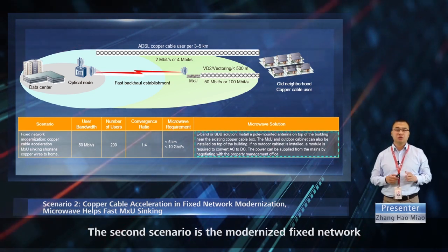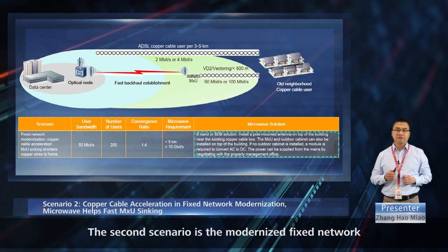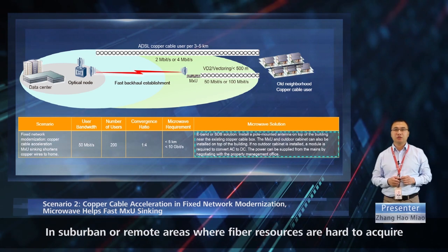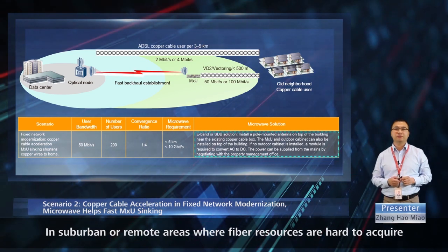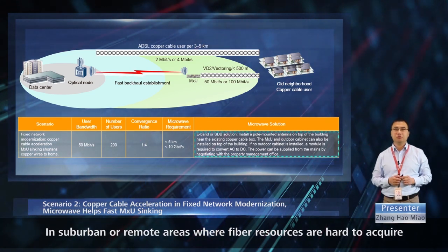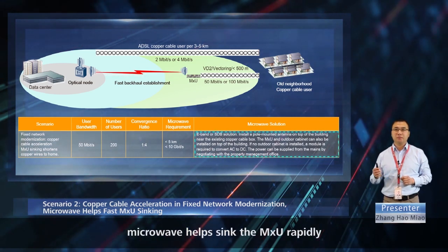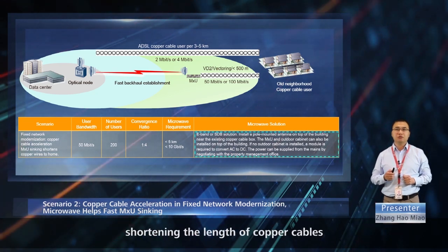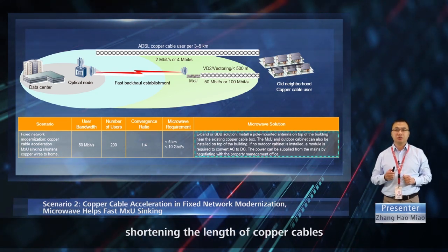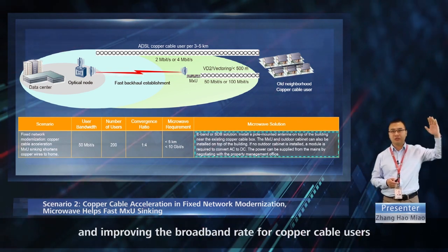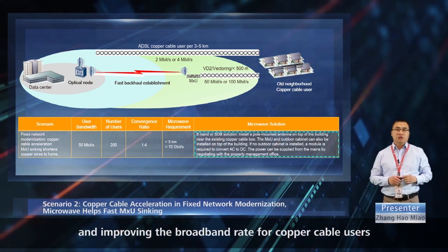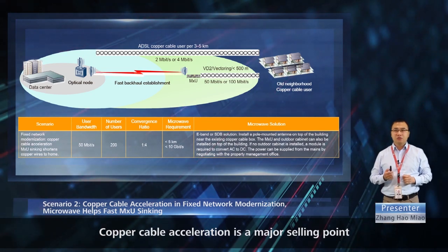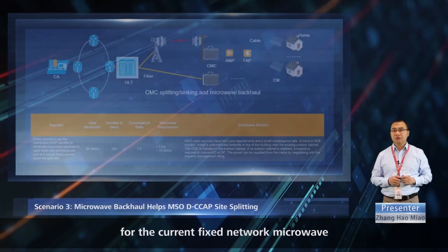The second scenario is the modernized fixed network, which accelerates old copper cables. In suburban or remote areas where fiber resources are hard to acquire, microwave helps sync the MXU rapidly, shortening the length of copper cables and improving the broadband rate for copper cable users. Copper cable acceleration is a major selling point for the current fixed network microwave.